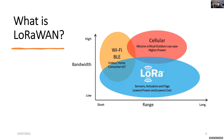Wi-Fi and Bluetooth have been quite adequate for many applications in the home and in industry, but they don't give adequate coverage when you want to go further than your home or property. You could use a cellular radio like 5G, but that costs quite a bit of money to operate. A much more recent solution has been LoRaWAN, and it fills the gap.